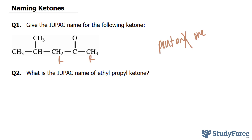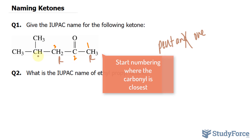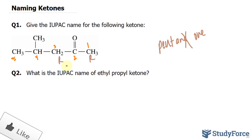Now that we have the base name, we need to number the carbons. We'll start numbering from this side, so we'll call this C1, 2, 3, 4, and 5. The reason I started from the right side is because this functional group occurs at C2. Whereas if I had started from the left side, it would occur at C4, which is bigger than 2. We want to reduce that number as much as possible.